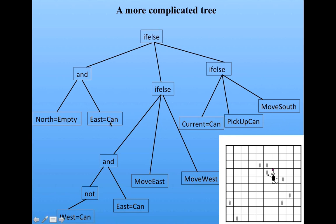He says: if north is empty and there's a can to my east — well, that's true, so follow the first branch. But this first branch has another if statement: if it's both true that there's not a can to my west and there is a can to the east, then follow the first branch of this — move east. Now in a new situation, is the north empty and is there a can to the east? No, so go to the final branch: if there's a can in the current site, there is, so pick up the can.